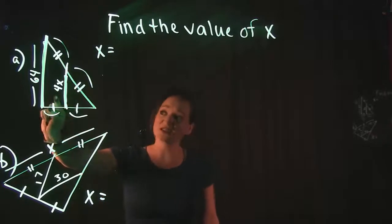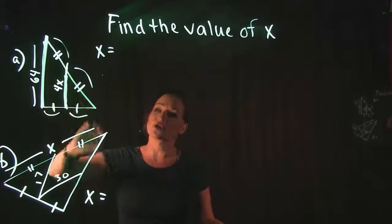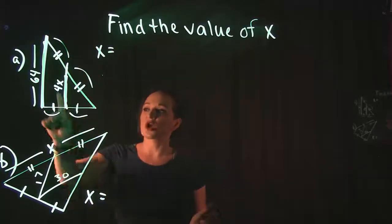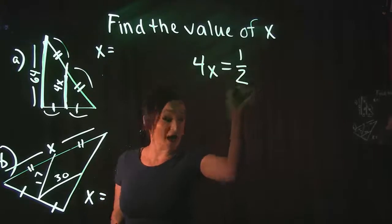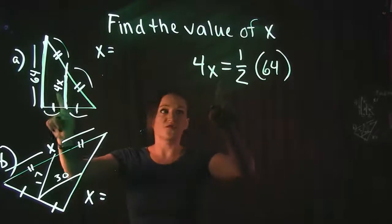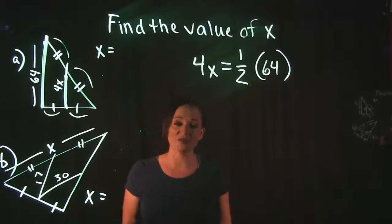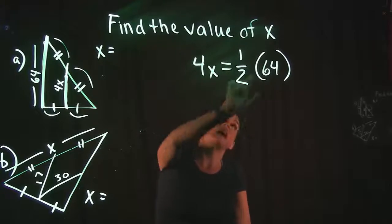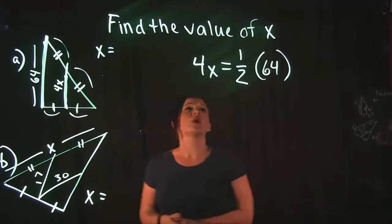So that means 4x is half of 64, which is what the theorem says. Whatever the smaller midsegment side is, you set it equal to half of the longer base side. So start with your midsegment, which is 4x, and set it equal to one half of the longer side. The longer side is 64, giving us the equation: 4x = (1/2)(64). On the left side put your midsegment, and on the right side put one half times the long segment.